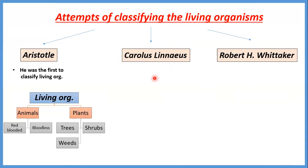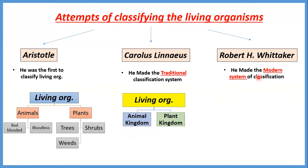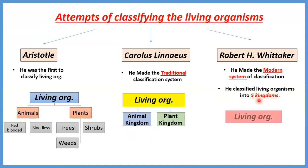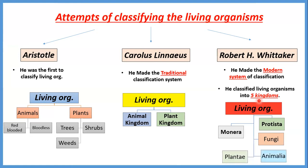بالنسبة لـCarolus Linnaeus — اسم الliving organisms وعمل لها traditional classification، بس سماهم two kingdoms بس: animal kingdom and plant kingdom. أما Robert Whittaker — ده اللي عمل الmodern classification بتاعت الliving organisms، وقال إن الliving organisms are classified into five kingdoms: kingdom Monera، kingdom Protista، kingdom Fungi، kingdom Animalia، وkingdom Plantae. ودي الfive kingdoms اللي إحنا هنتكلم عليهم.